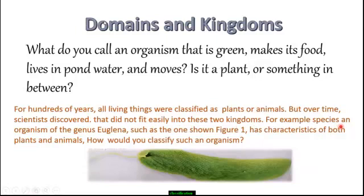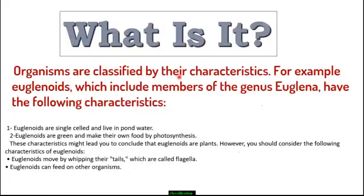For example, species of the genus Euglena, such as the one shown in Figure 1, has characteristics of both plants and animals. How would you classify such an organism? Organisms are classified by their characteristics. Euglenoids, which includes members of the genus Euglena, have several defining characteristics.